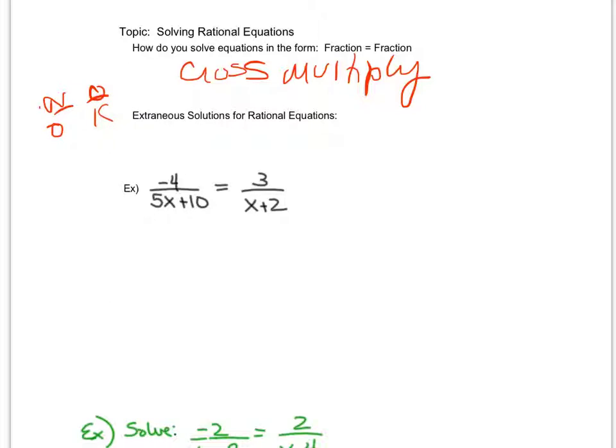Yes, it's okay to have a zero in the numerator. So for extraneous solutions for rational equations, check to see if solution puts a zero in the denominator.